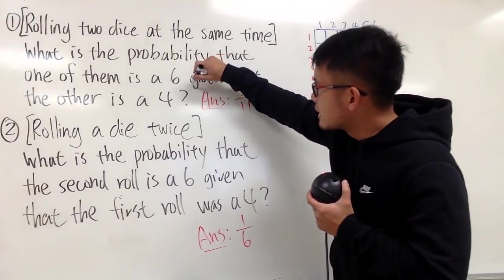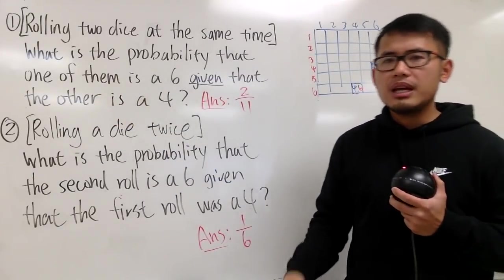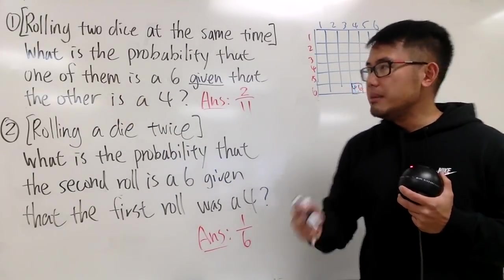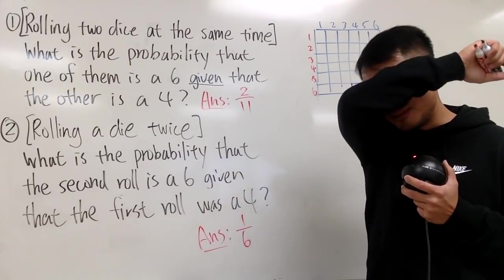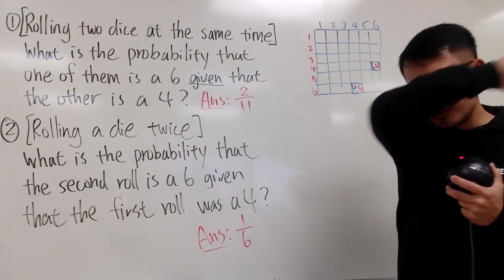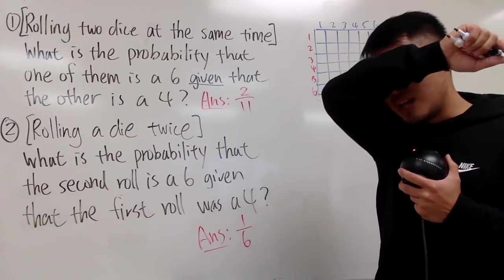Because we are given that one of the dice is a 4. This is the idea. Imagine that when you roll the dice, you have been covered, your eyes have been covered, so you don't know what it is. So you just roll the dice like this. And then, somebody tells you,